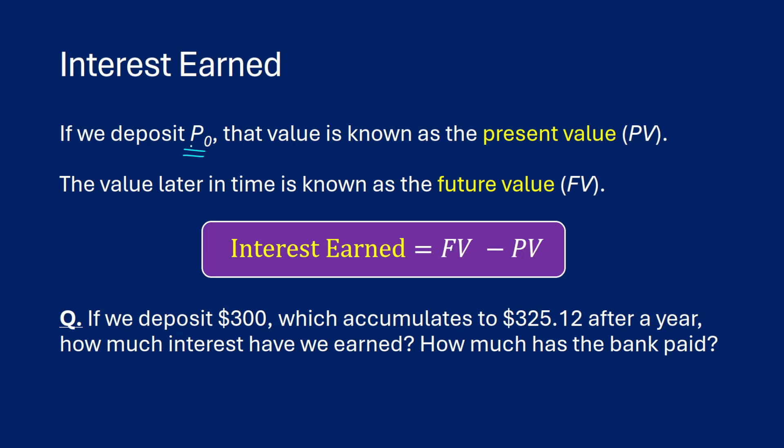So we deposit $300, which accumulates to $325.12 after a year. How much interest have we earned? Well, our future value is going to be $325.12, and we're subtracting our present value of $300, which is going to give us interest of $25.12. So this is how much we gained.